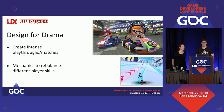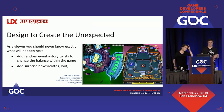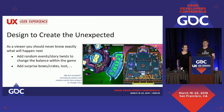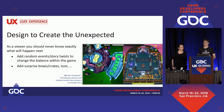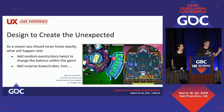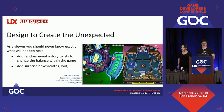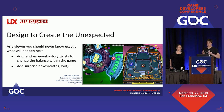We also want to design to create the unexpected. A viewer comes to a stream and should never know exactly what will happen next — and that's one reason they'll probably stay to find out. We can add random events or story twists to change the balance within the game, add surprise boxes, crates, or loot. For example, in 'We Are Screwed,' a space co-op game we're currently working on, we have procedural content generation and random events that force players to change roles all the time.